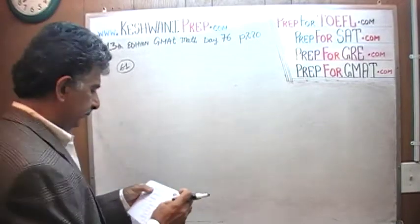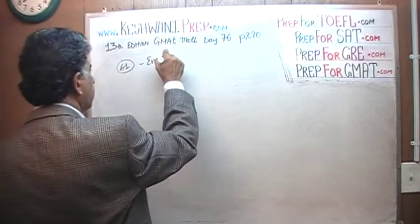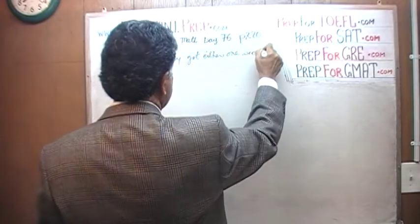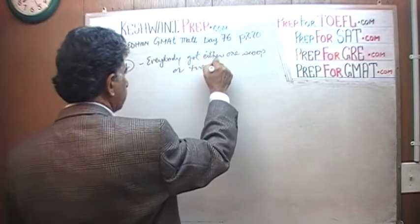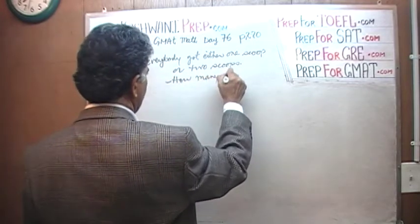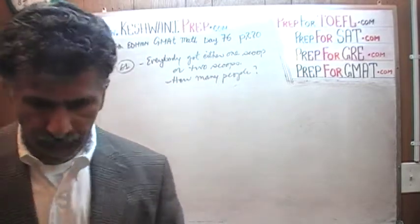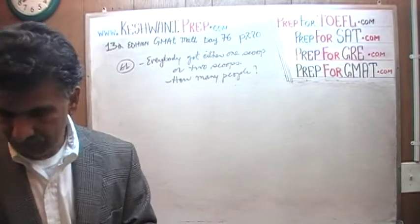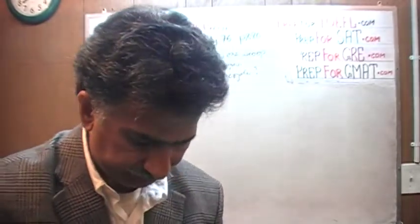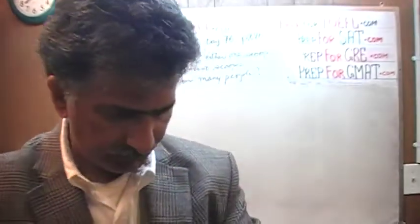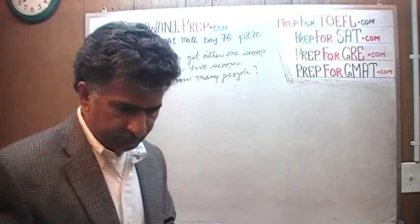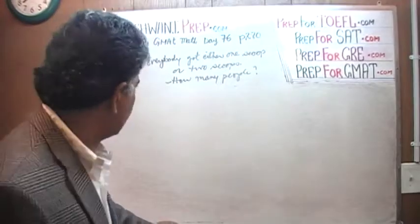Number 61. Everybody got either one scoop or two scoops. Question simply is, how many people? How many people did we serve the ice cream? If you just give me one second, I am going to grab a bag here and I am going to see if I have any black marker in it because this is annoying me. This thing is completely dead. Oh, there you go. We have a whole bunch of them here.